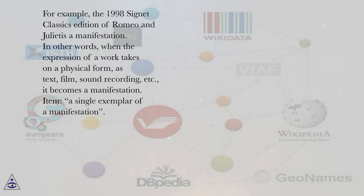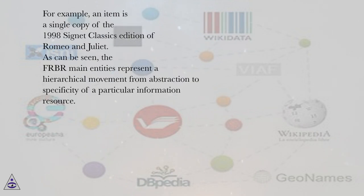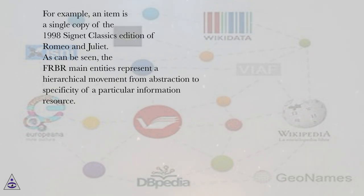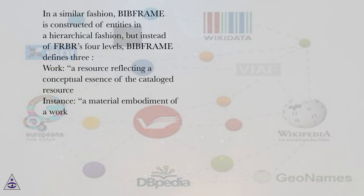Item: a single exemplar of a manifestation. For example, an item is a single copy of the 1998 Signet Classics edition of Romeo and Juliet. As can be seen, the FRBR main entities represent a hierarchical movement from abstraction to specificity of a particular information resource. In a similar fashion, BIBFRAME is constructed of entities in a hierarchical fashion, but instead of FRBR's four levels, BIBFRAME defines three.